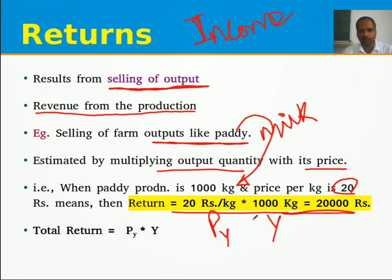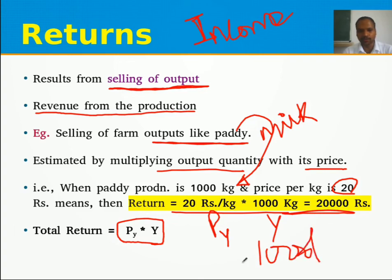Output is regarded as Y and price of output as PY. So total return = PY × Y. For multiple outputs, for example if 1000 liters of milk at 40 rupees per liter gives 40,000 rupees, the total return formula becomes: PY1 × Y1 + PY2 × Y2, summed for all outputs.